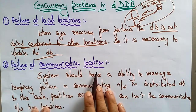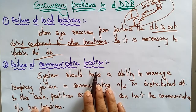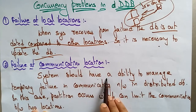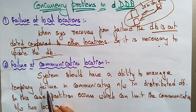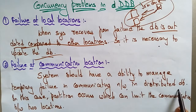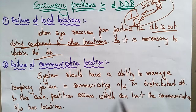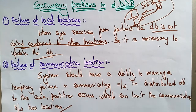Another concurrency problem is failure at a communication location. The system should have the ability to manage temporary failures in the communicating network and the distributed database. In this case, a partition occurs which can limit the communication between two locations.